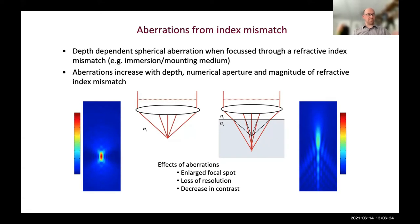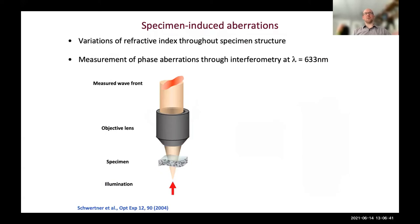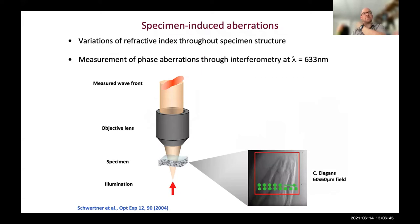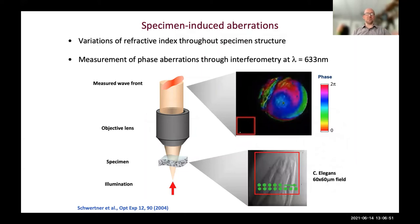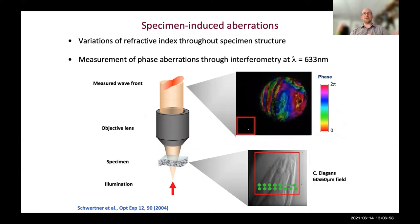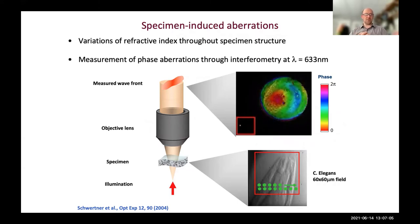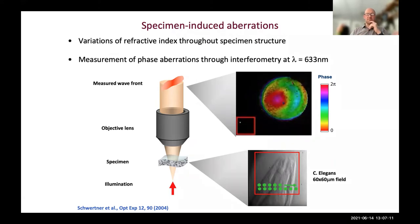The most common source of aberrations is refractive index mismatch - for example, between a cover glass and the immersion medium. These aberrations depend on the depth of focusing, the numerical aperture, and the magnitude of the refractive index mismatch. The problem is much more complicated than just planar refractive index mismatch because the specimen below the cover slip has its own refractive index structure.